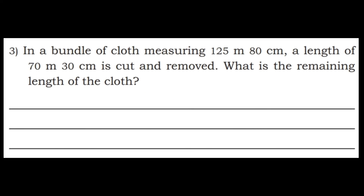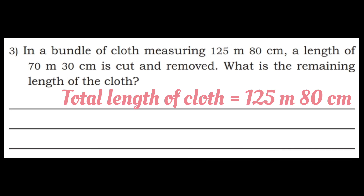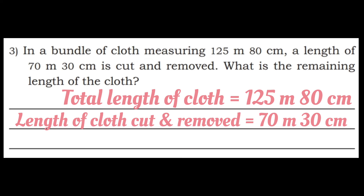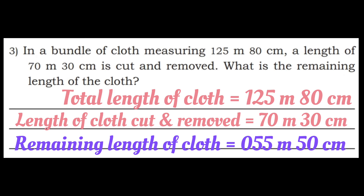Q3: In a bundle of cloth measuring 125 meter 80 centimeter, a length of 70 meter 30 centimeter is cut and removed. What is the remaining length of the cloth? Total length of cloth = 125 meter 80 centimeter. Length cut and removed = 70 meter 30 centimeter. Remaining: 0 minus 0 is 0, 8 minus 3 is 5, 5 minus 0 is 5, borrow: 12 minus 7 is 5, 0 will be there. Answer: 55 meter 50 centimeter.